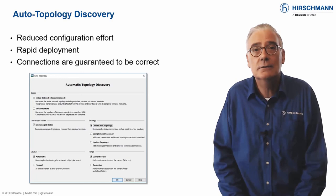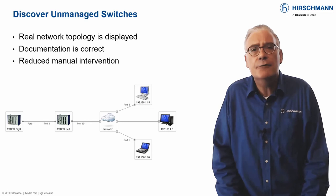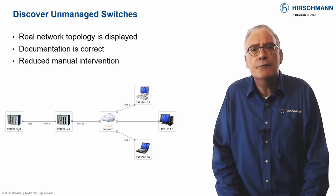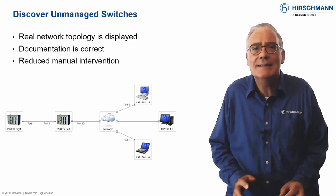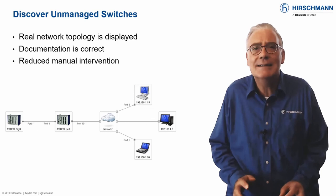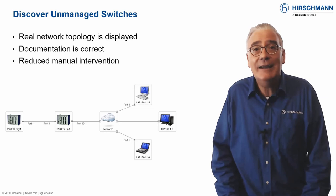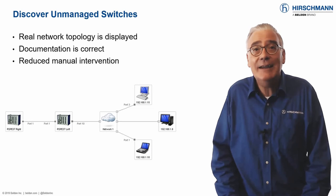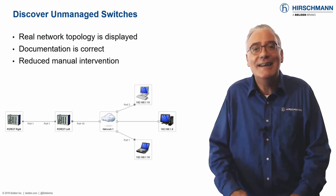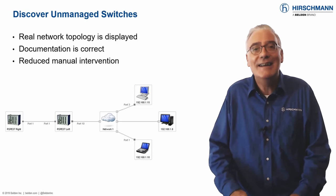To reliably supervise a network, the infrastructure must be built using managed switches. These devices provide information about topology and status, which forms the basis of the graphical display. Managed switches are slightly more expensive than unmanaged ones, so some users deploy unmanaged switches at the edges of a network where operation is not critical. Even so, it is still important to have an accurate overview of your complete network topology. You could manually draw unmanaged switches into your network map, or you can allow Industrial HiVision to deduce the location of unmanaged switches and display them as part of the topology map.